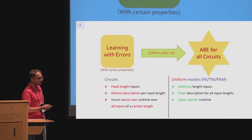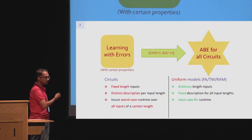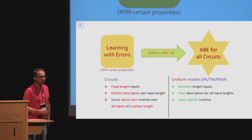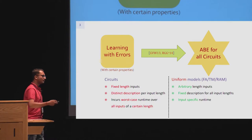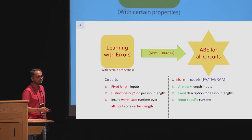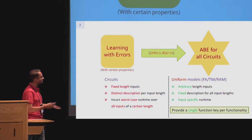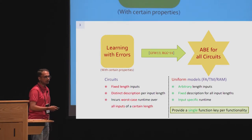Moreover, if we have ABE supporting a uniform model of computation, that gives us the flexibility of giving out a single key per functionality, because the description doesn't change based on the input length.